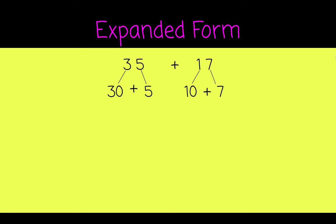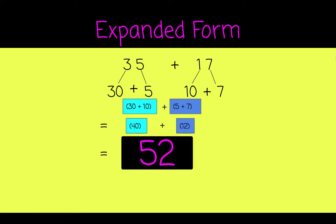Remember your addition symbols. Let's add 30 plus 10. Then 5 plus 7. Which gives us 40 plus 12 for a final sum of 52.